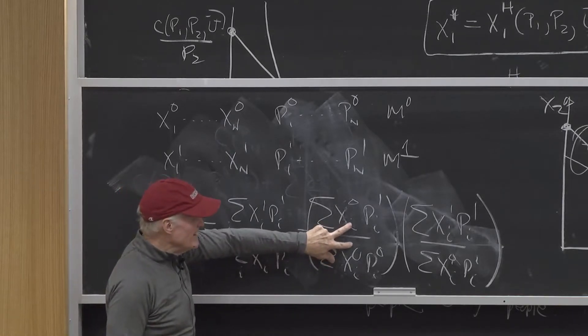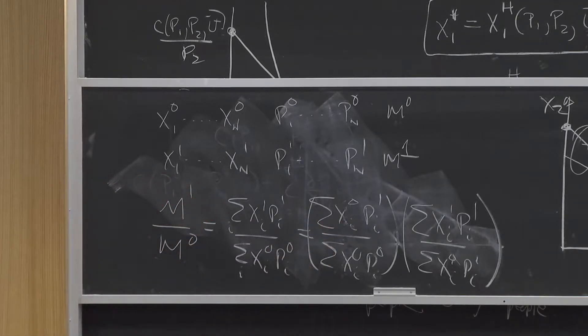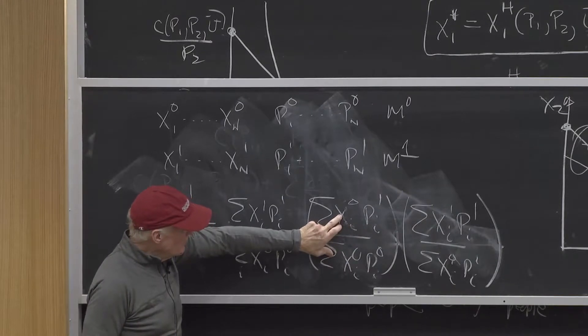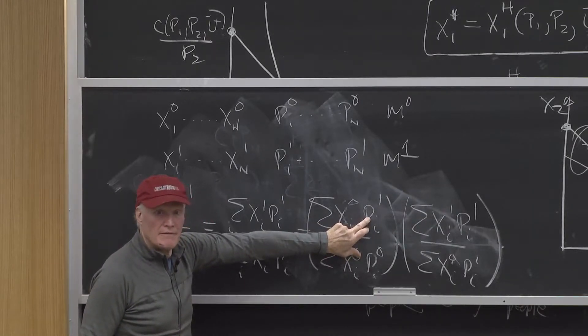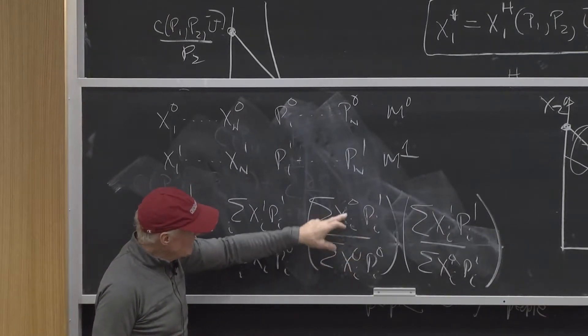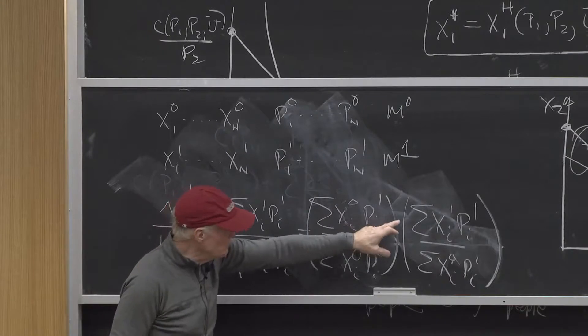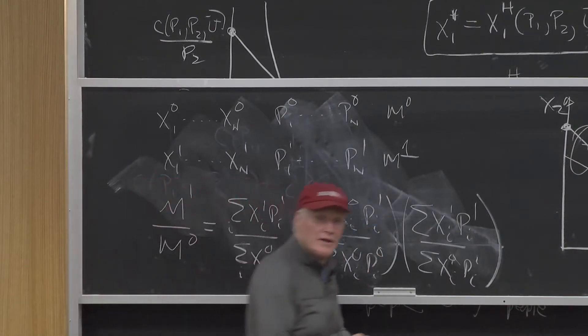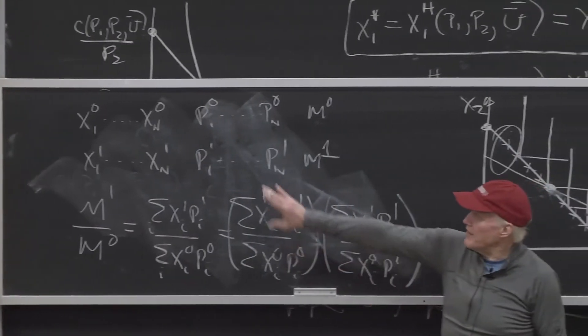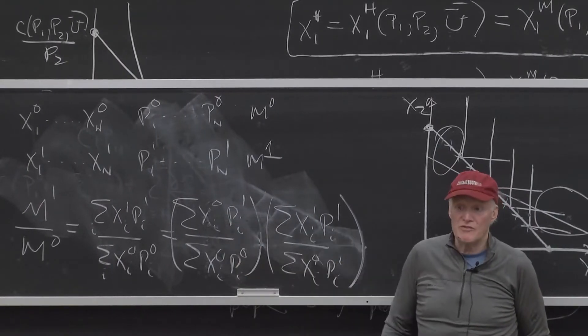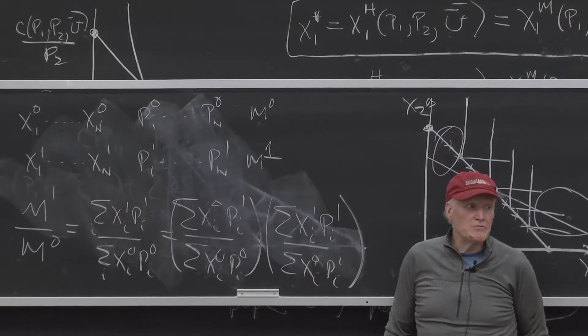And you'll notice that this is the same concept we had over here because I'm comparing the cost of the same bundle at different prices. If you want to write it in terms of changes, just subtract 1 and then you'll see it's xi naught, p1 minus p0 divided by that. It's like the change, the change from 1. So this is exactly what that formula is telling you to do. It's a first order approximation to the cost function. That's my Laspeyres price index.